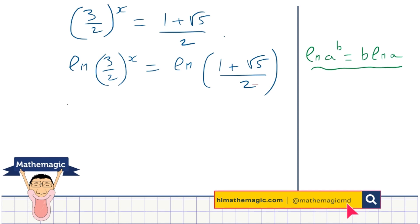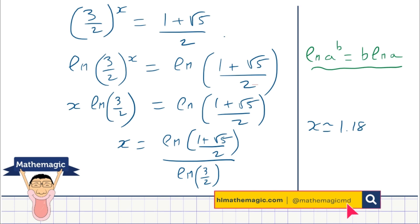And so dropping the x in front, x ln 3 over 2 is equal to ln of 1 plus root 5 divided by 2. And for our final step, we can just move the ln of 3 over 2 to the right hand side and say x is equal to ln of 1 plus root 5 divided by 2 over ln of 3 over 2. And if you were to use technology and type this into your calculator, you would find that x is approximately equal to 1.1868, roughly.